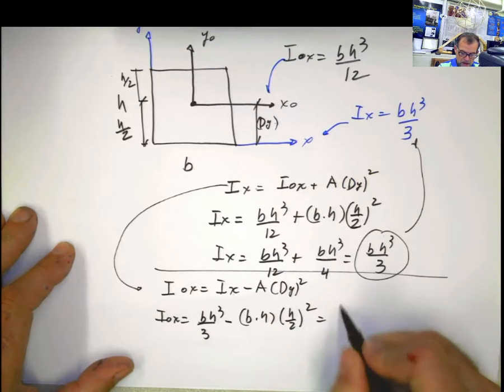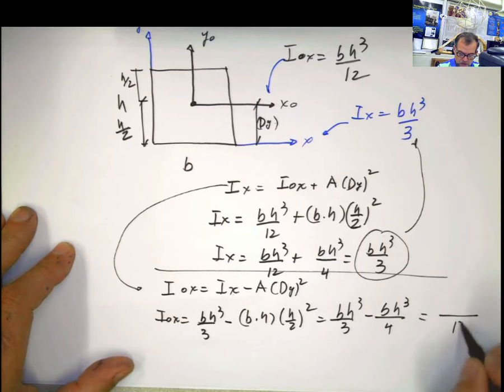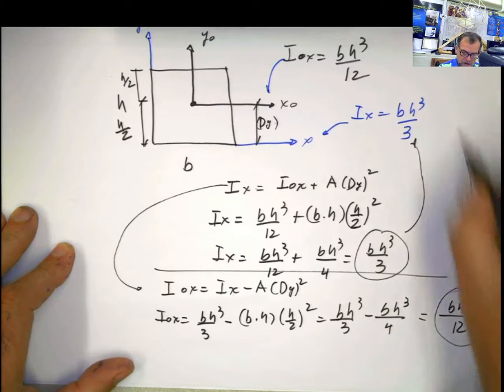When you do that, you have bh cubed divided by 3, minus bh cubed divided by 4, and that is 4 minus 3, 1, bh cubed divided by 12, which is what we said before.